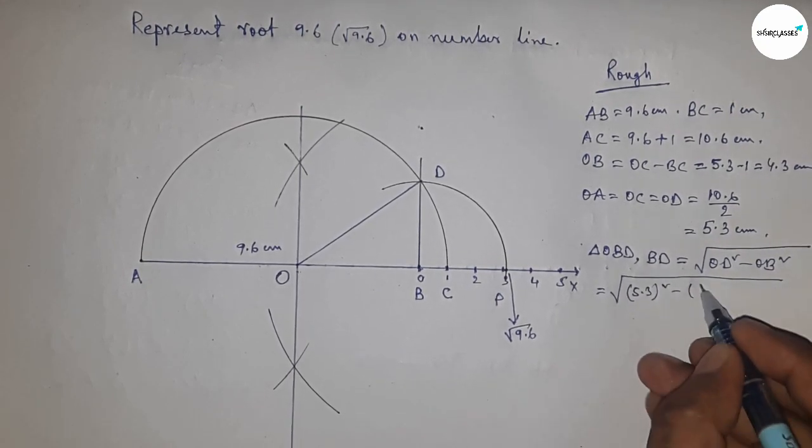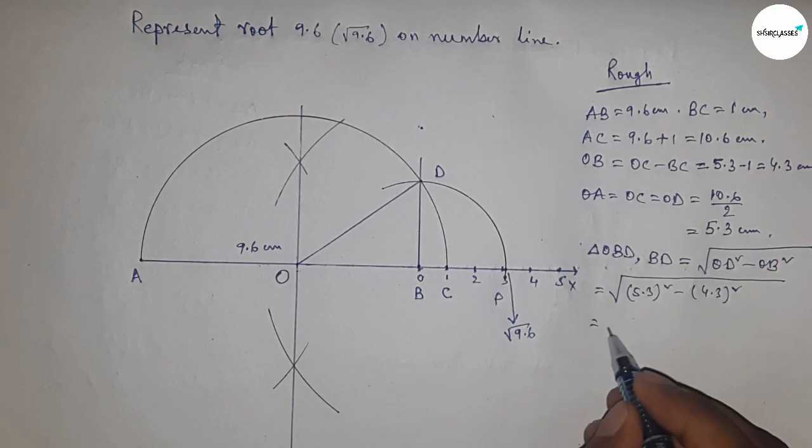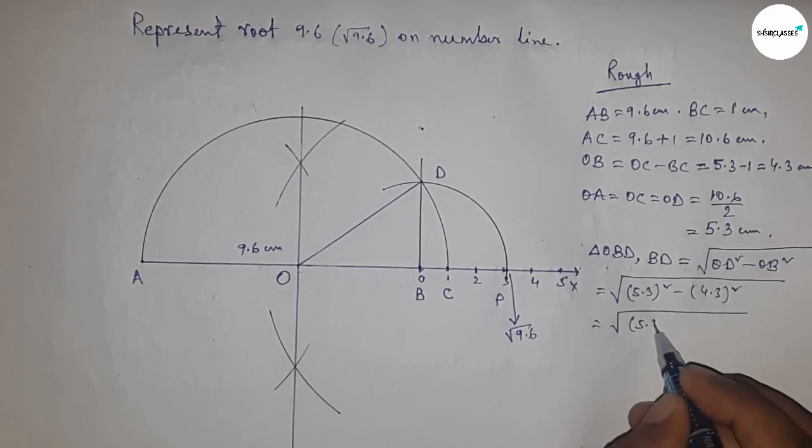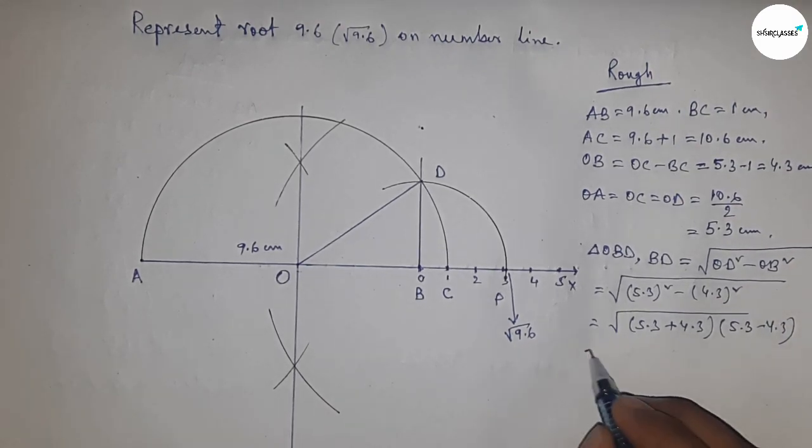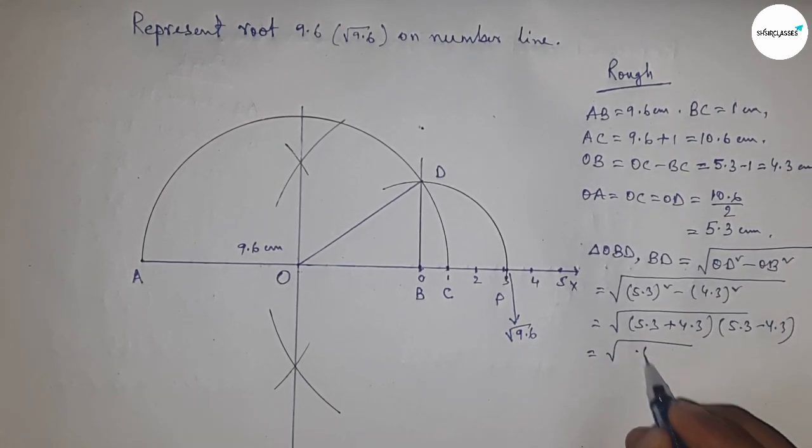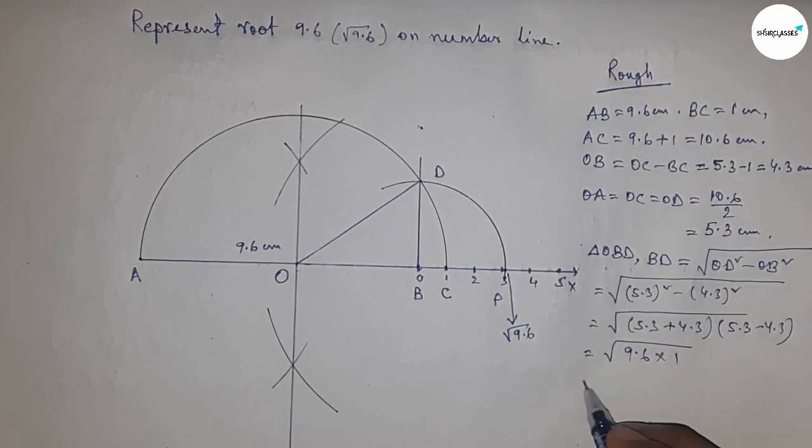Using the formula a squared minus b squared equals (a plus b)(a minus b), and applying the formula here, this equals root 9.6 centimeters.